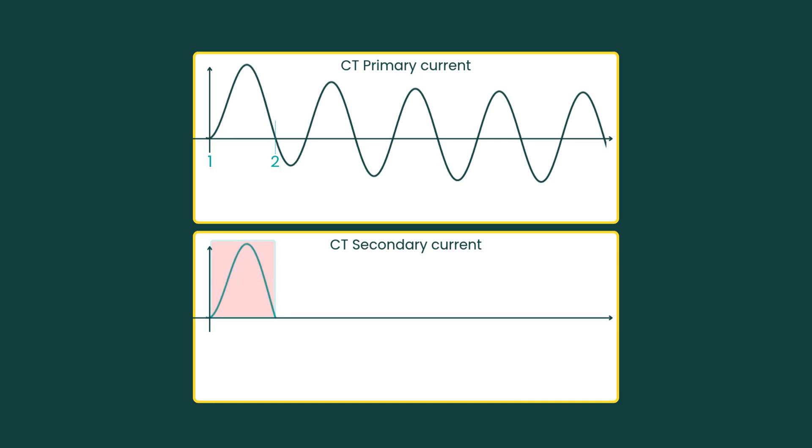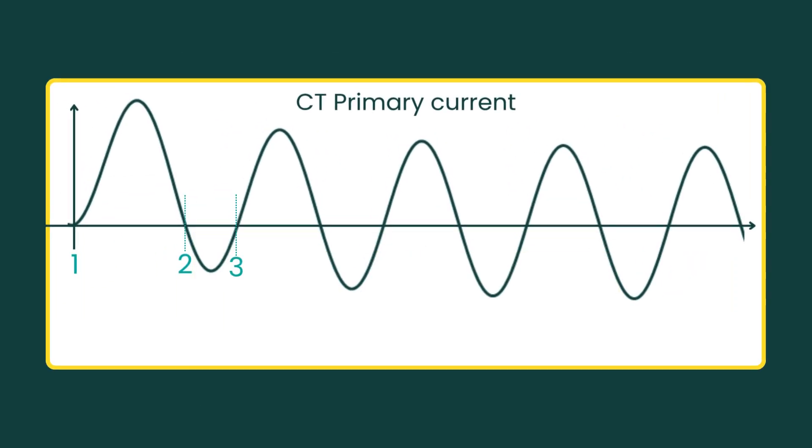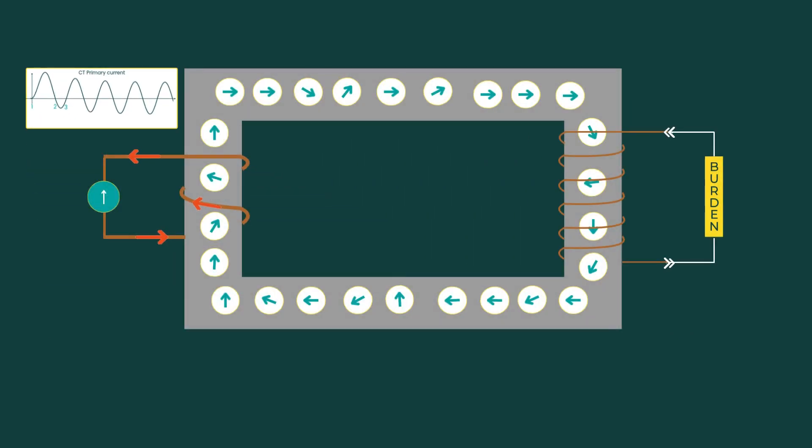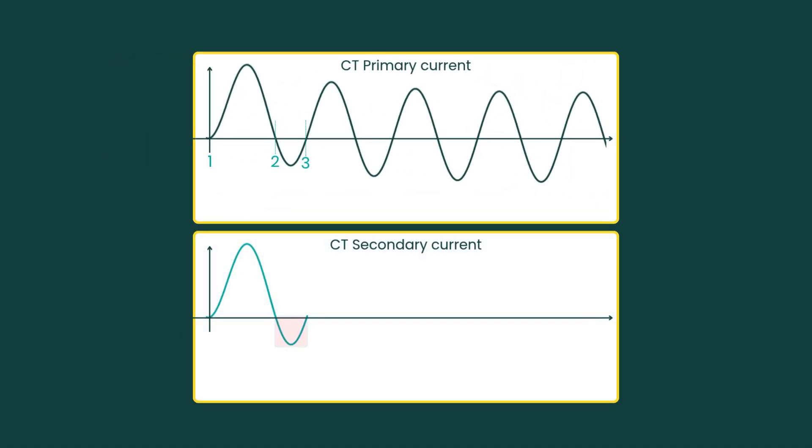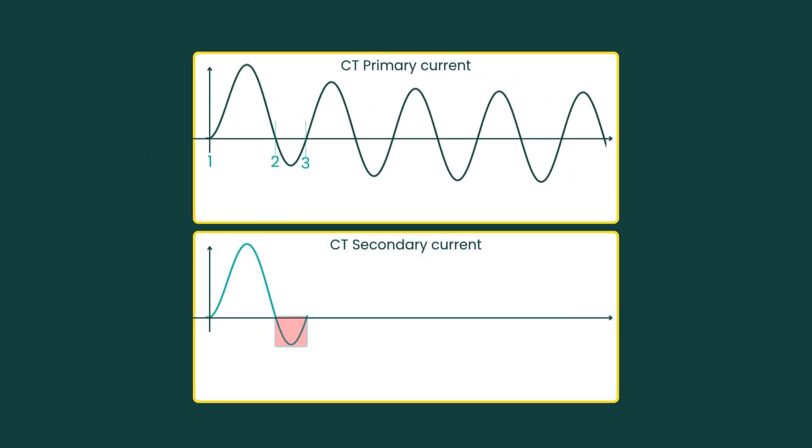Then comes the first negative half cycle, from point 2 to point 3. The current goes negative, but because of the DC offset, the negative half cycle is short and not very strong. Only a few dipoles manage to reverse before the current turns positive again. The flux is changing, so the CT works as expected; the secondary current follows the primary current, scaled by the CT ratio.